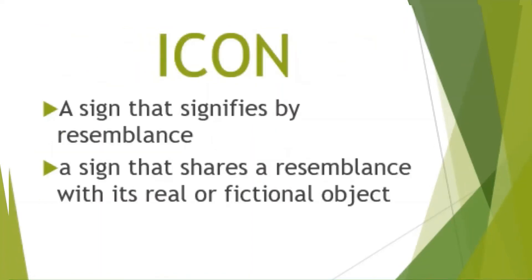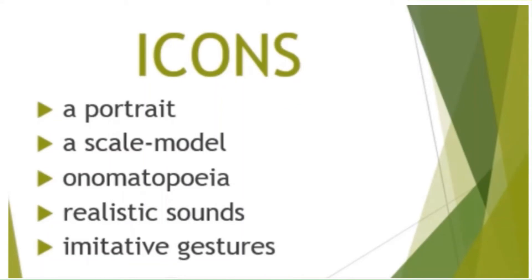An icon is a sign that signifies by resemblance. In other words, when the sign shares a resemblance with its real or fictional object, it is called an icon. Some semioticians define the icon as a type of sign that imitates the object, in the sense that it looks, sounds, feels, tastes, and smells like the object itself. Common examples of icons are portraits, scale models, onomatopoeic words, realistic sounds, and imitative gestures.